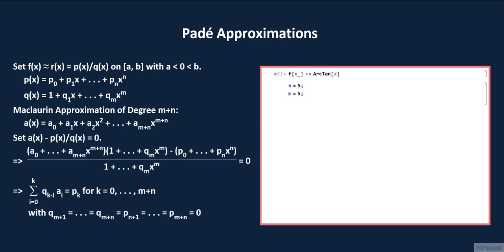Within this input cell, we include the definition of the Maclaurin coefficients. There is a Mathematica command for generating the Taylor and Maclaurin series of a function, but instead we use the basic formula for the Maclaurin coefficients. We use a dual loop to generate them. For the different a sub k's, we need the derivatives of f. Uppercase D is the Mathematica command for differentiation. a sub k is the k-th order derivative of f with respect to x, divided by k factorial, evaluated at x equals 0 — entered as slash, period, x, arrow 0. This is done for k equals 0 to m plus n. We then evaluate this input cell.